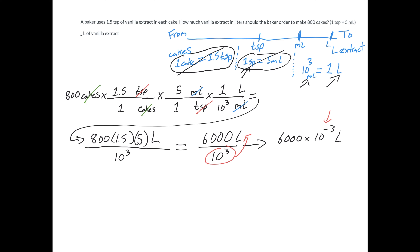If I want to simplify that into standard notation — because it looks like the answer isn't wanted in scientific notation — I can say I'm at negative three and I want to make that a zero, ten to the zero. I go larger, which means I move my decimal to the left, and it's three places I need to do that: one, two, and three. And we end up with six liters.